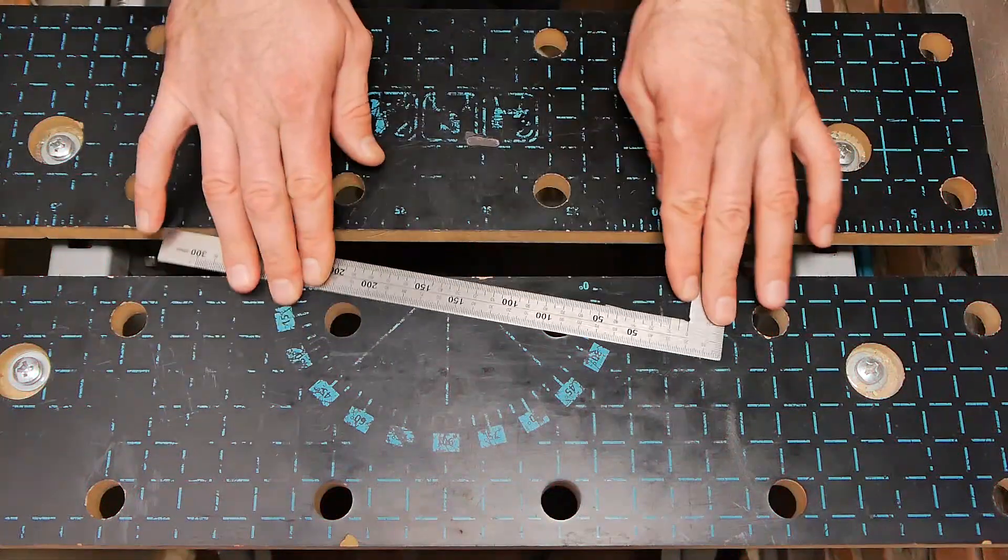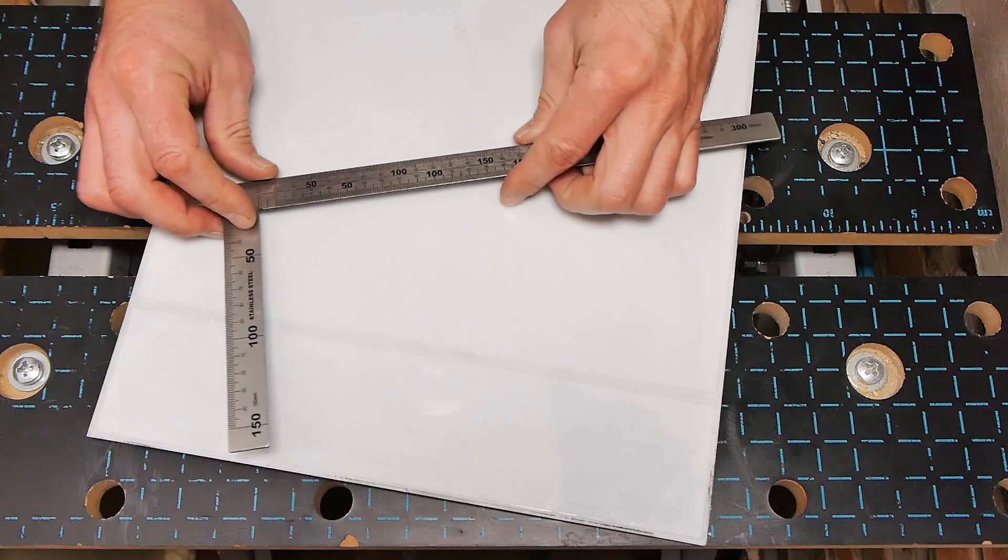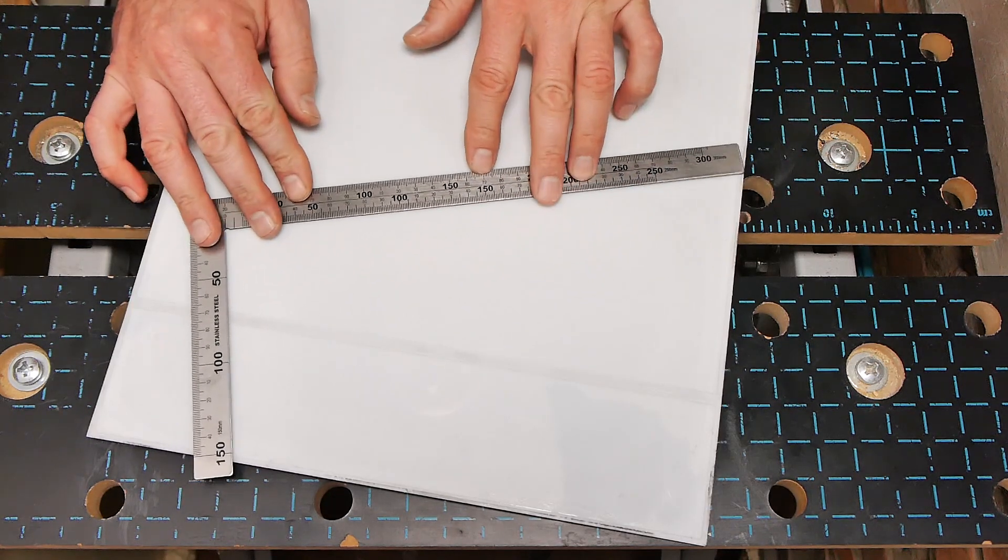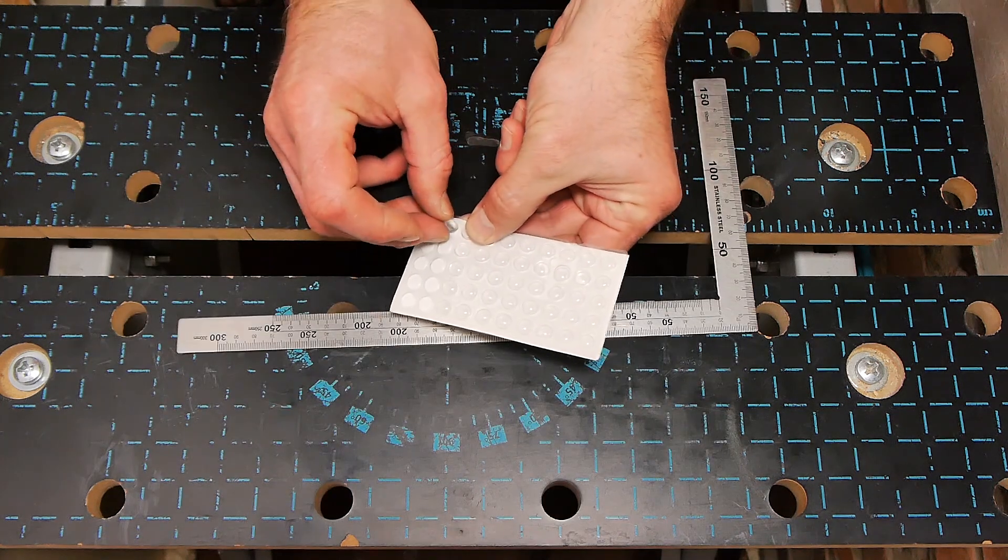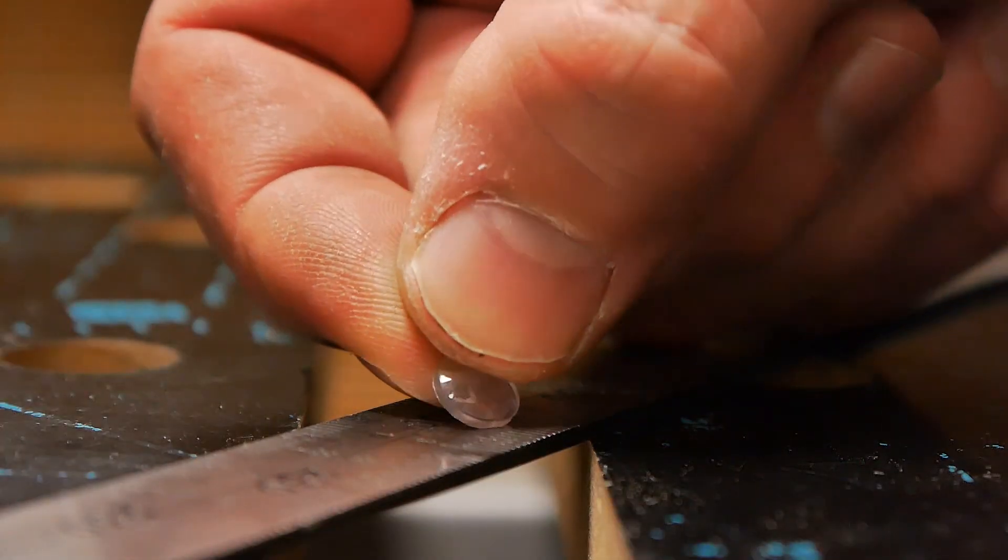A smooth measuring tool often slides over the surface, which can interfere with the measurement or, still worse, damage the delicate material. Therefore, you need to glue furniture silicone dampers on the backside of the ruler or trisquare.